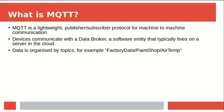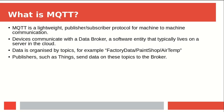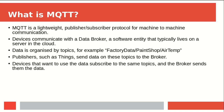Devices can either be publishers or subscribers. Publishers connect to the broker and publish data onto topics — the topics are used to categorise the data, so if you want your humidity readings, you publish to, say, factory/data/paint-shop/humidity. Then devices that want to make use of the data, such as a data analytics package, would subscribe to the same topics, and the broker will send them the data as it becomes available.